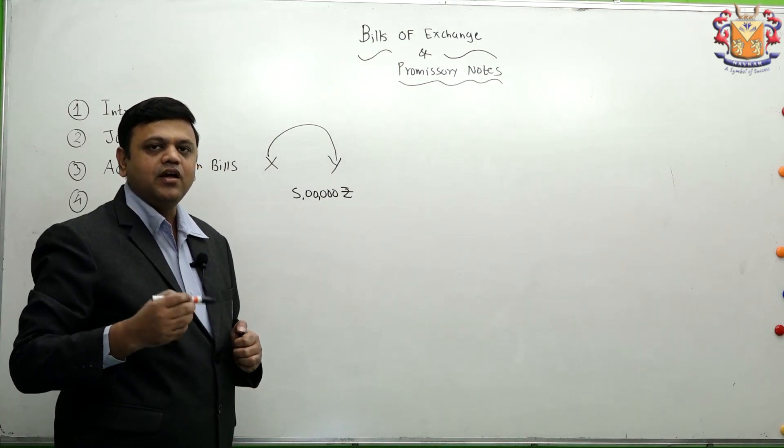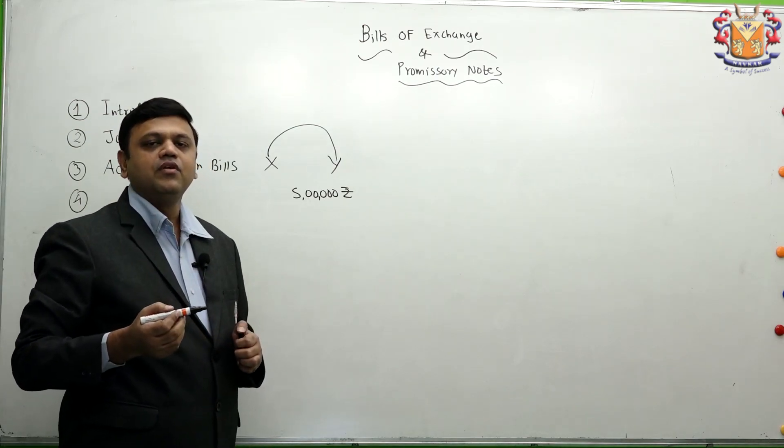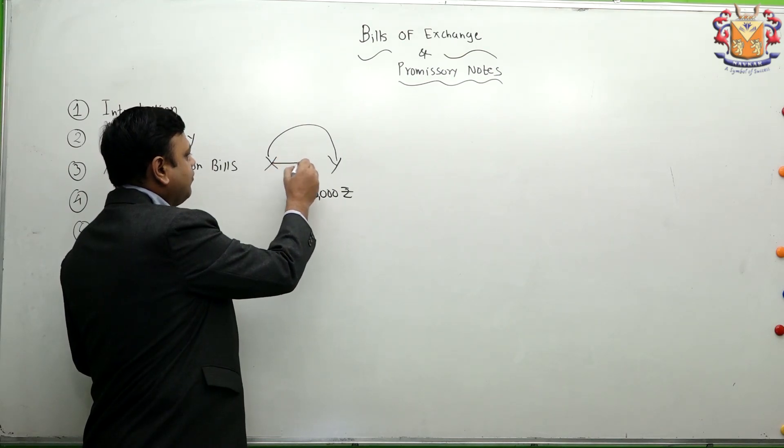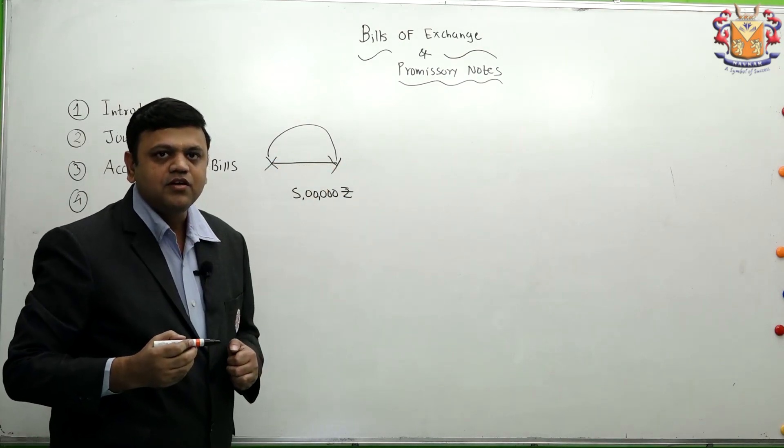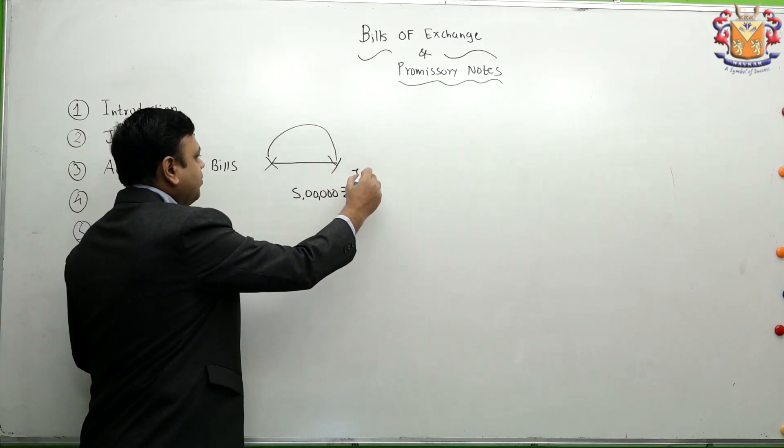As per the tradition of the market, every trader allows some credit period, and Y is also asking some credit period from X. When X is asking for payment to Y, Y demands some credit period. Y asked for a one month credit period in this case.